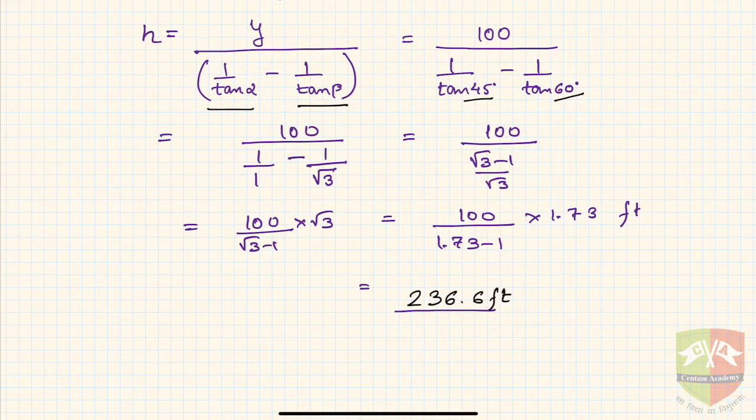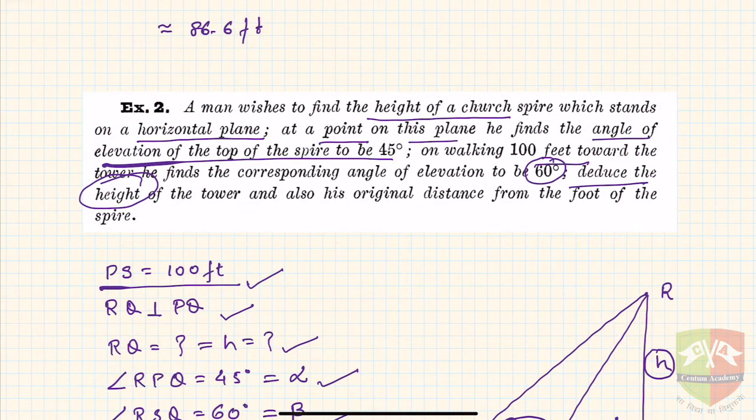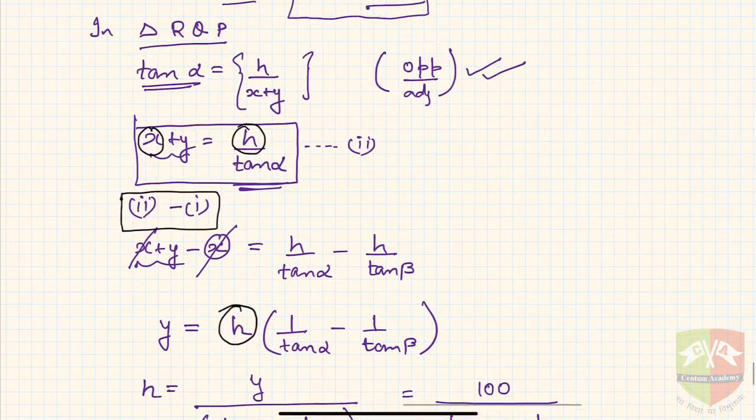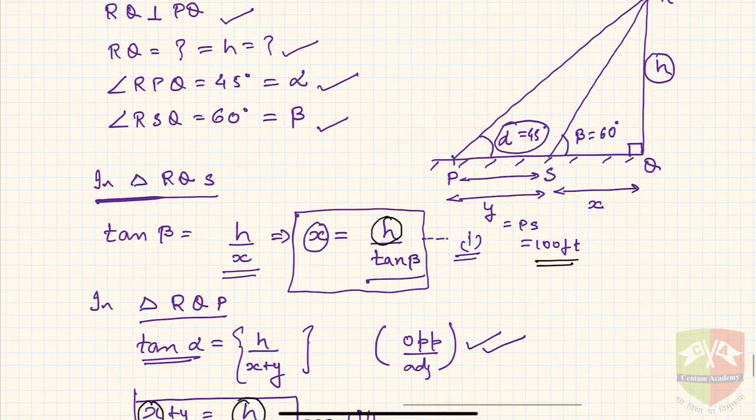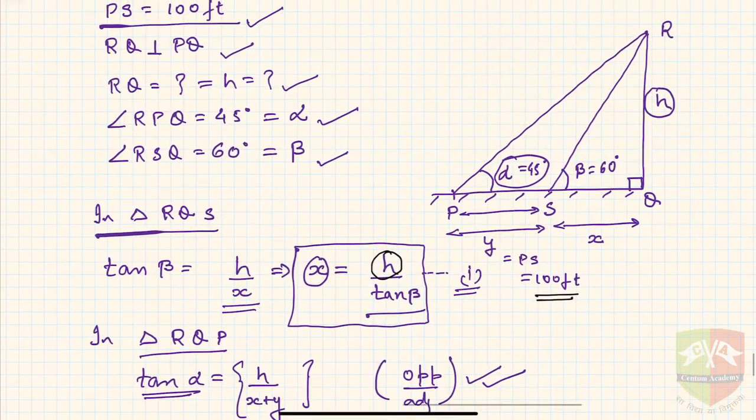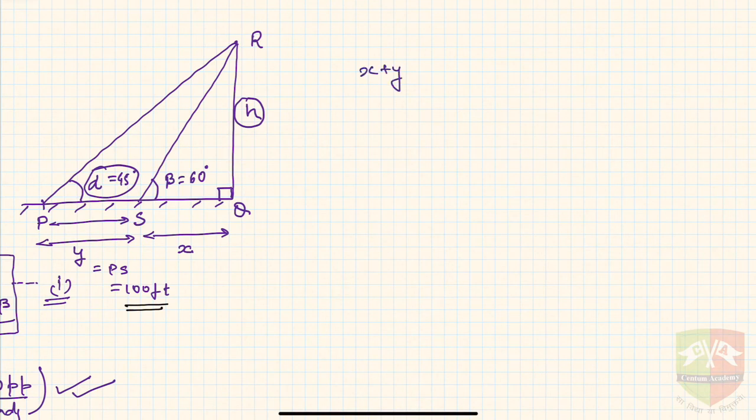This was part A. Now there was another part to the question: also find his original distance from the foot of the spire. Basically, you have to find out x + y. If you see in triangle RPQ, another part of the question was what is the distance x + y.